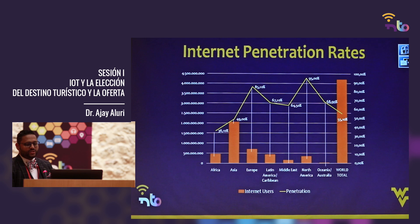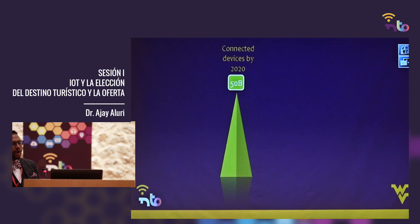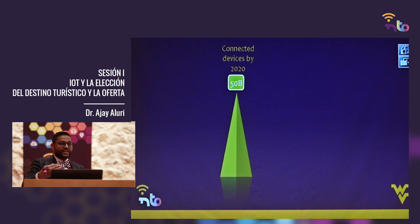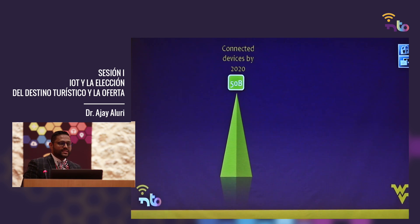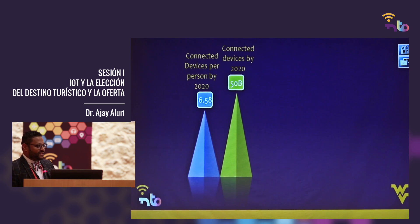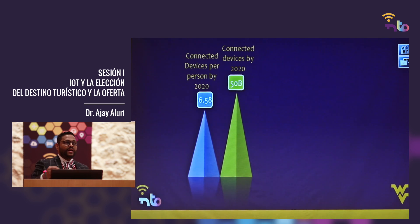What's also happening is how people are connected. If you look at connected devices, by 2020 we have 50 billion. Mr. Levy mentioned this morning an expectation of 100 billion by 2025. The connected devices per person by 2020 is 6.58 — in other words, people are connected to at least six to seven devices around them by 2020.